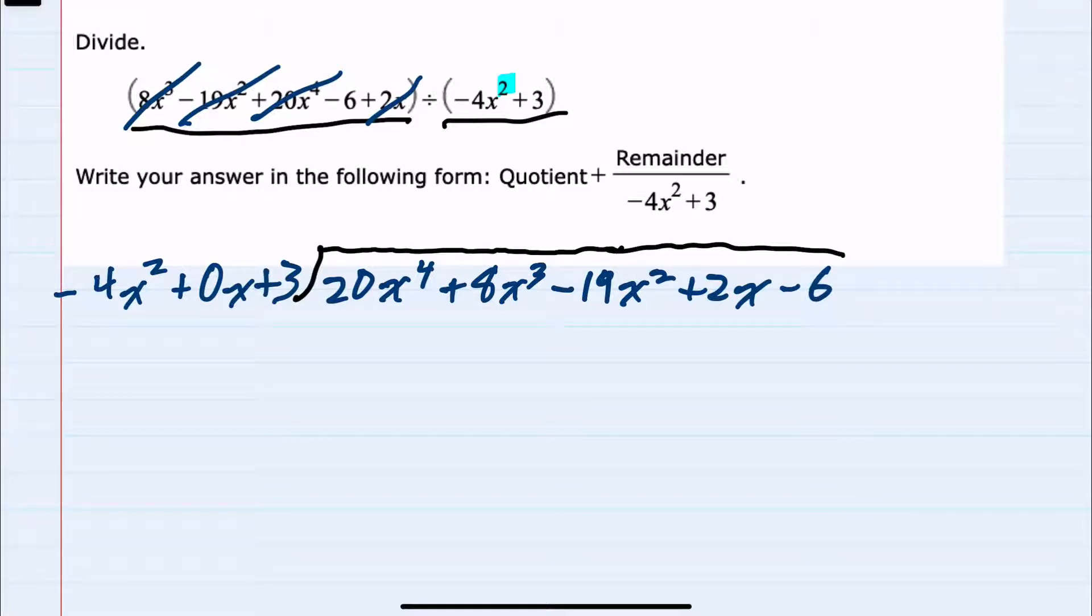And now that we have it written out for long division, I can look at the leading terms to divide the 20x⁴ divided by a minus 4x². 20 divided by minus 4 gives me a negative 5. x⁴ divided by x² is x². So I'll put this in over the place value for our squared x's.